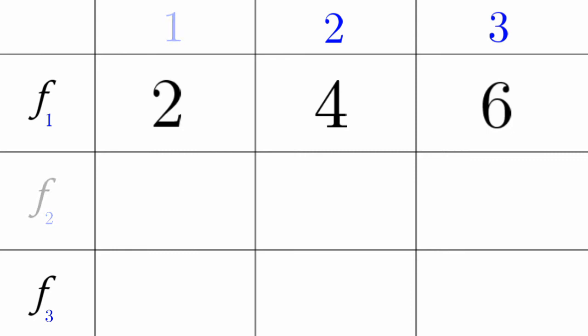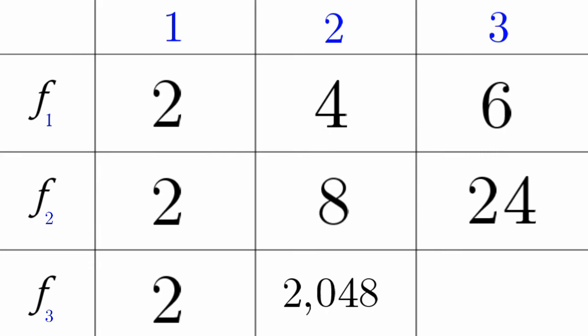f sub 2 of 1, that's equal to 2. f sub 2 of 2, that's equal to 8. f sub 2 of 3, that's equal to 24. f sub 3 of 1, that's 2. f sub 3 of 2, that's equal to 2048. f sub 3 of 3, that's the 121 million digit number.